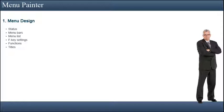Menu bars define functions available to the user. Where the functions appear depends on the dialog. If the dialog is modal, the functions appear at the bottom of the interface as a row of buttons. In the primary window, the functions can appear both as a row of menus and as buttons in a toolbar.